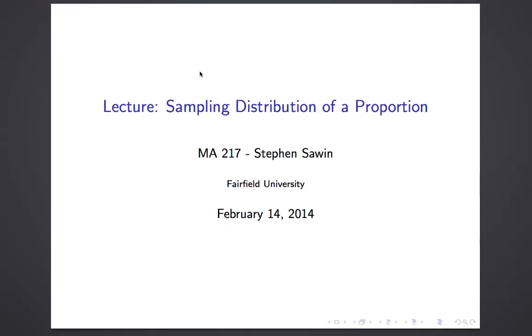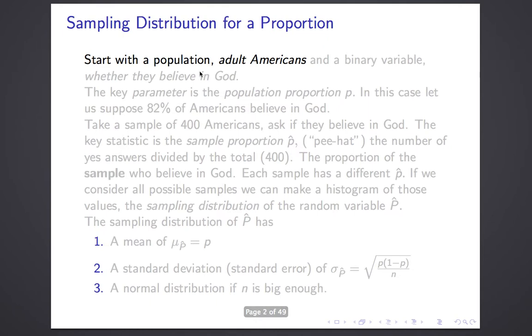This is the Math 217 lecture on the sampling distribution of a proportion. This is the beginning of a major transition. We're going to take what we learned about probability, and in particular random variables, and apply it to what we did early in the semester, which was all about variables, populations, samples.